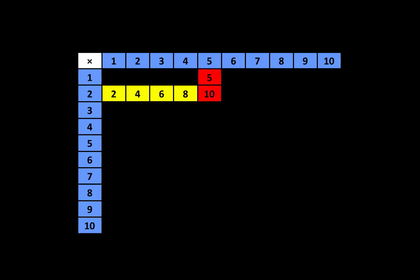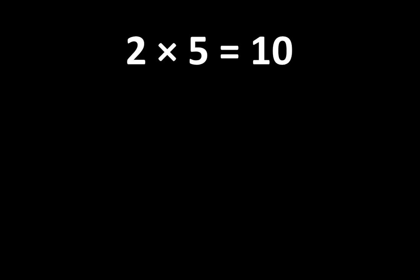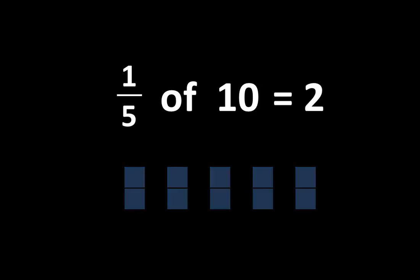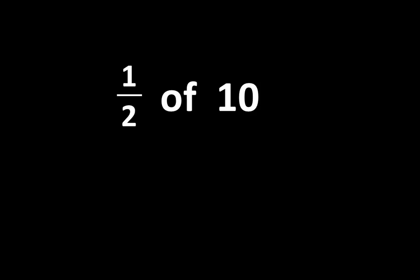Understanding that 10 is a multiple of both 2 and 5 is very important. 2 times 5 is equal to 10, and there are many important ideas related to the number 10. If we divide 10 into 5 equal parts, each part would be 1 fifth of 10, and 1 fifth of 10 is equal to 2. At the same time, if we divide 10 into 2 equal parts, each part would be 1 half of 10, and 1 half of 10 is equal to 5.